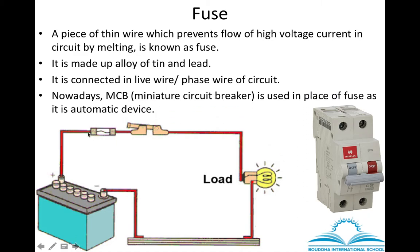Nowadays, in place of this fuse wire, a device called MCB — miniature circuit breaker — is used because it is automatic in function. When there is a flow of high voltage current, this switch gets automatically switched off, protecting the device in the circuit. We can switch it back on and it will work normally again. MCB is widely used today because it is very easy to use and automatic in nature.